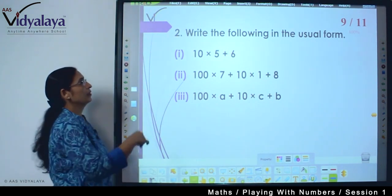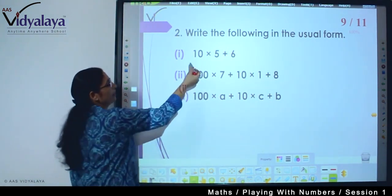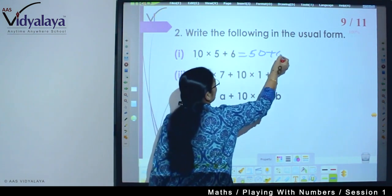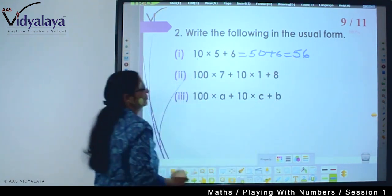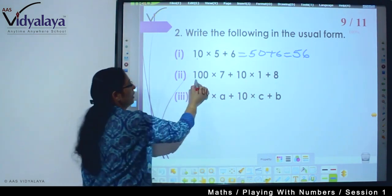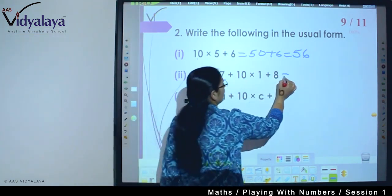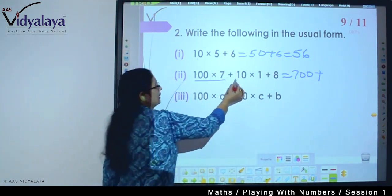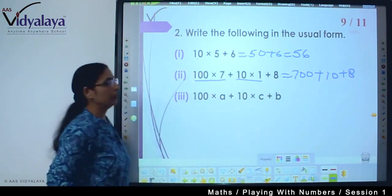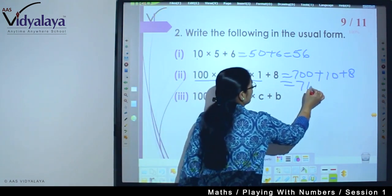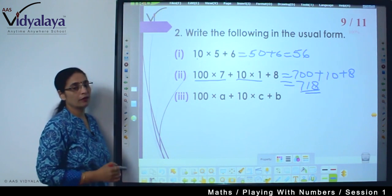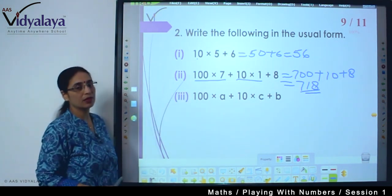So starting with the next sum: write the following in the usual form. How do we write these numbers in usual form? So 10 into 5 will become 50 plus 6 it will become 56. 100 into 7 plus 10 into 1 plus 8, how do we write? 100 into 7 that is 700 plus 10 into 1 it will become 10 plus 8. Now if you add all of them, the answer will be 718. So 10 plus 8 is 18 and 700 plus 18 it will be 718. So this is the way we write the numbers in usual form.